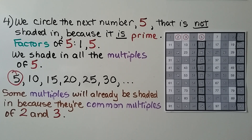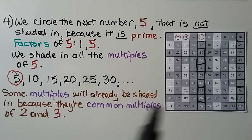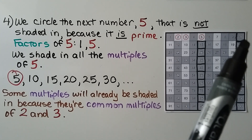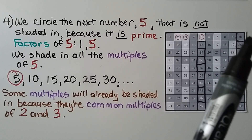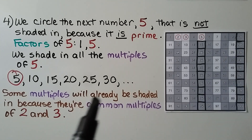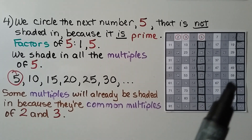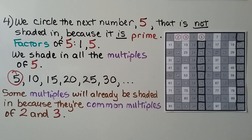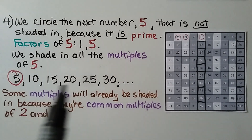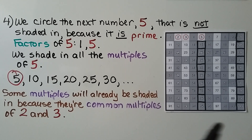Some multiples of 5 will already be shaded in because they're common multiples of 2 and 3. For example, 10 is a multiple of 5, but it's also a multiple of 2, so it's already shaded in. 30 is a multiple of 5, but it's already shaded in because it's a multiple of 3. Check all multiples of 5 up to 100 and make sure they're all shaded in.